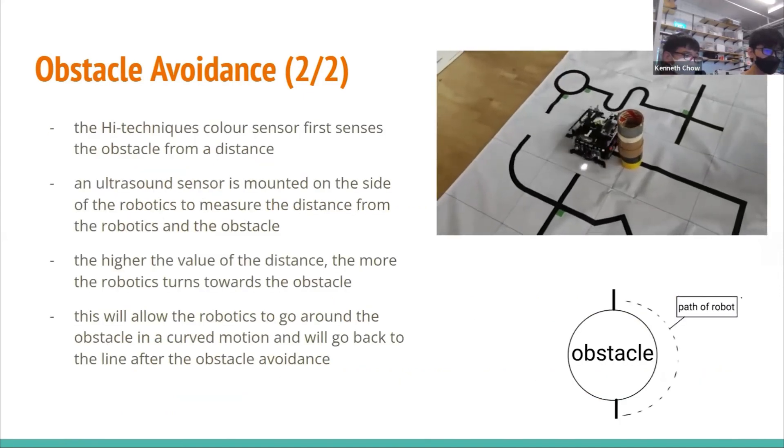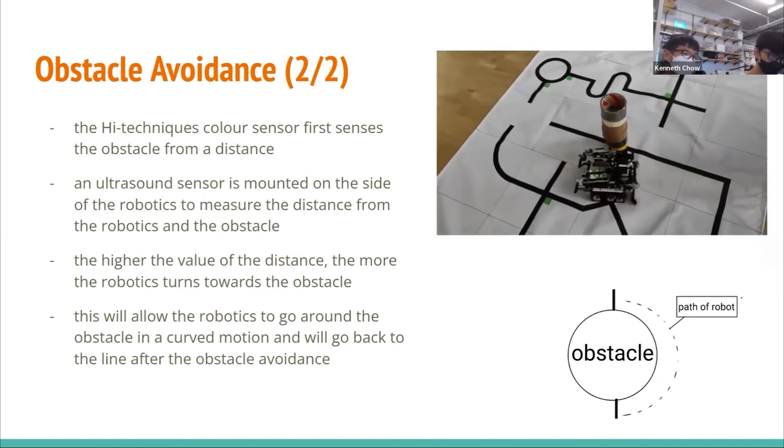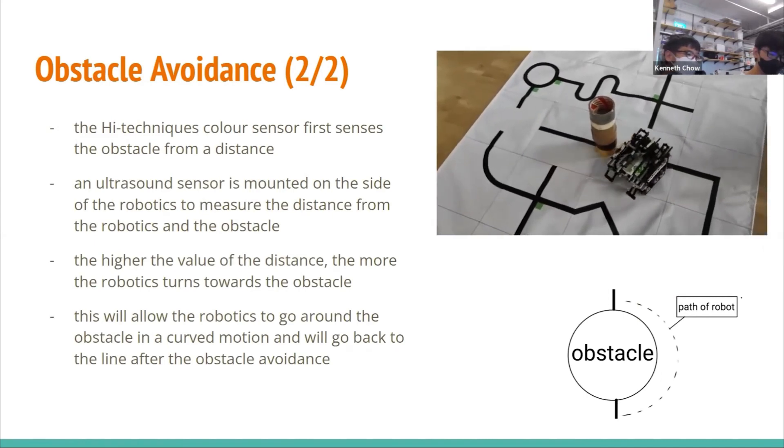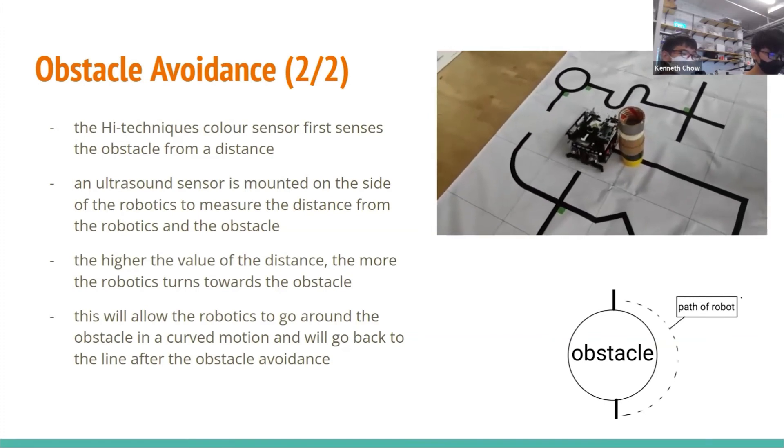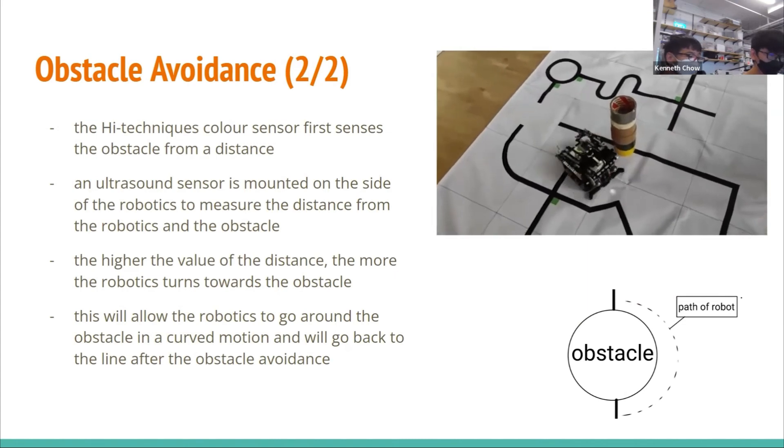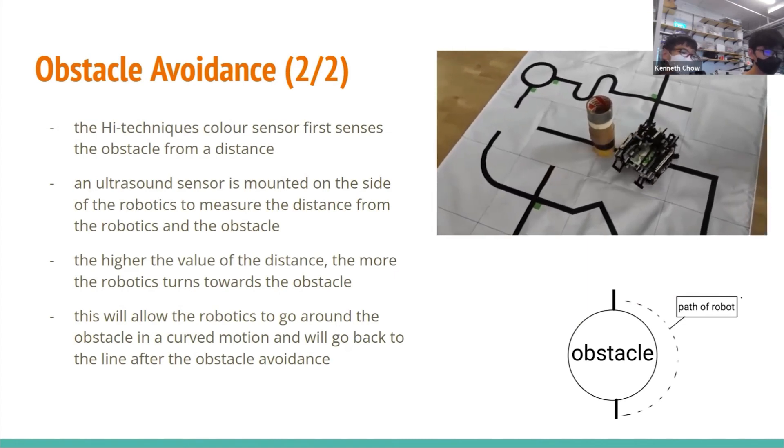To avoid the obstacle, the Hi-technic color sensor will first sense the obstacle from a distance. An ultrasound sensor is then mounted on the side of the robot to measure the distance from the robot to the obstacle. The higher the value of the distance, the more the robot turns towards the obstacle. This will allow the robot to go around the obstacle in a curved motion and will go back to the line after the obstacle avoidance.